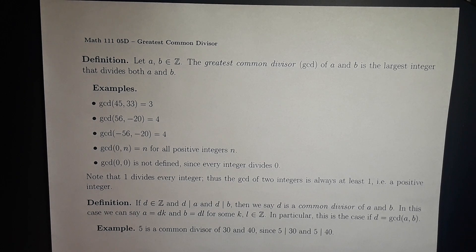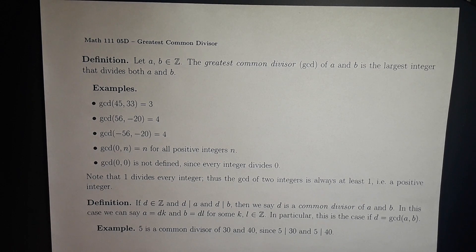Similarly, the GCD of 56 and negative 20 is 4, and the GCD of negative 56 and negative 20 is also 4, so you can see that the negative signs don't matter.